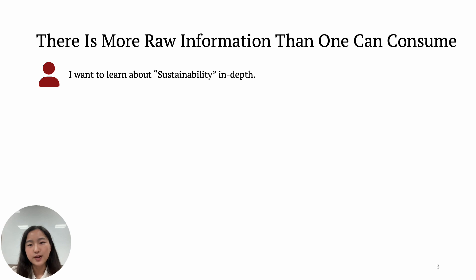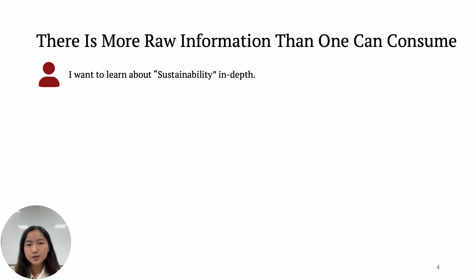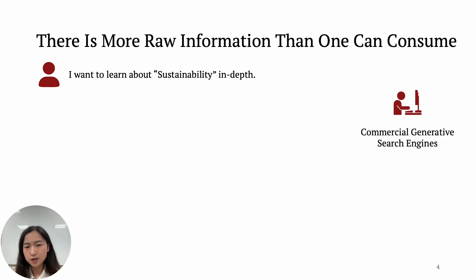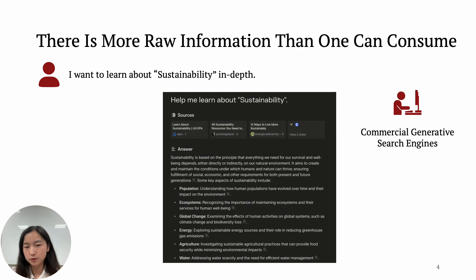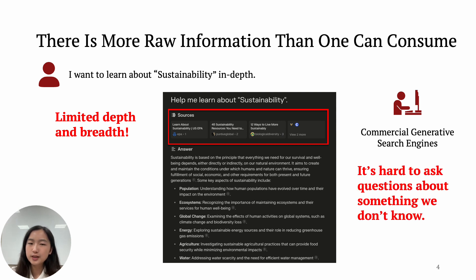With the advancement of large language models today, you may directly go to chat with ChatGPT. However, the model's generation is hard to verify. To improve verifiability, commercial generative search engines produce text with citations. However, the sources they cite have limited depth and breadth. Also, the major issue is that it is actually hard for people to ask questions about something they don't know.